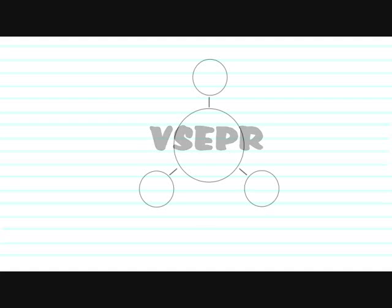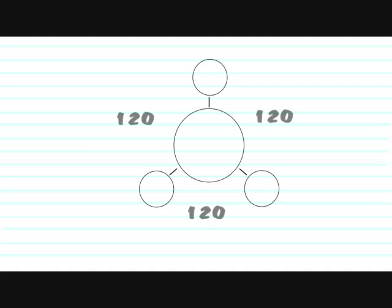Let's look at an atom with three other atoms bonded to it. VSEPR theory states that these will repel each other, so consequently the angles between these atoms will be equal. In this case, it's 120 degrees.